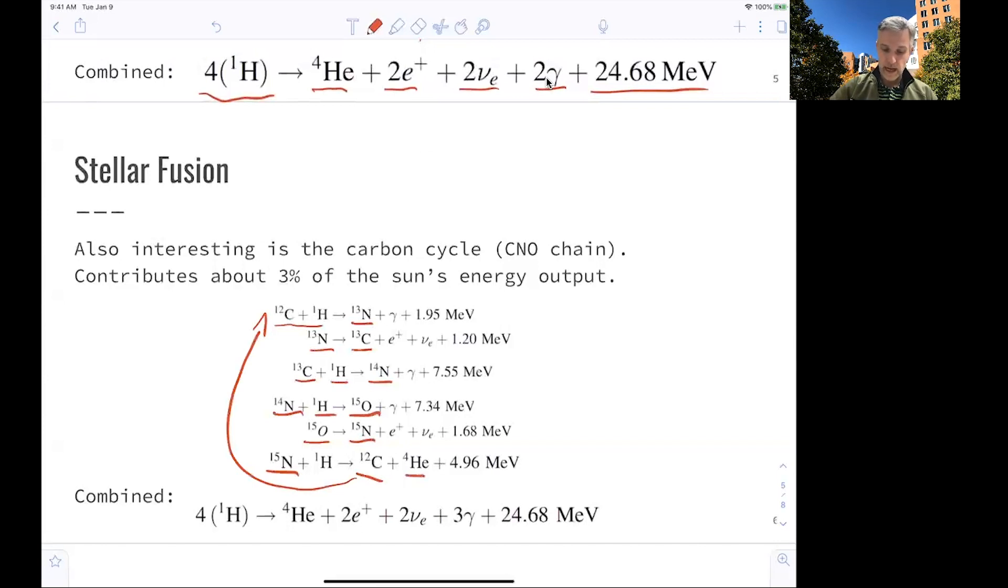So you see that the carbon-12 is the catalyst here, which is used to produce helium and energy. So if you combine this cycle, you find that, again, from four protons or four hydrogen atoms, you produce helium, positrons, neutrinos, three photons, and energy. Very similar to the combined chain with the exception that there is one additional photon. And again, here, the positrons supply additional energy when they annihilate with electrons.